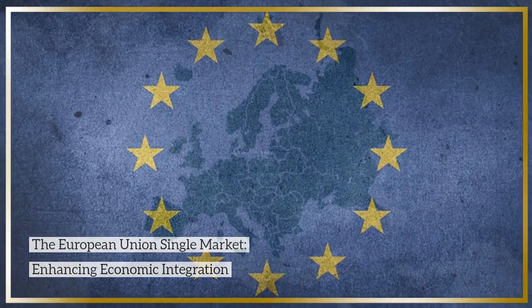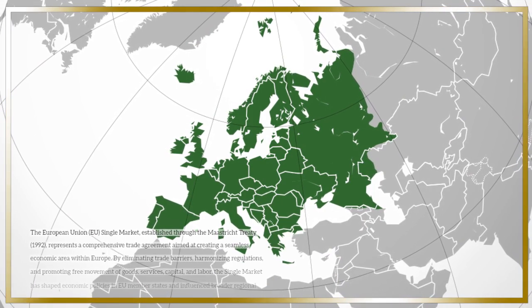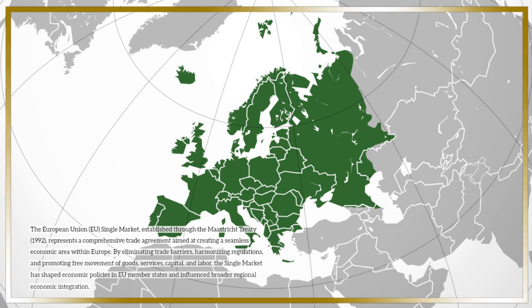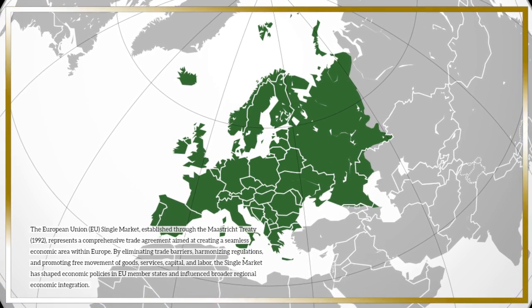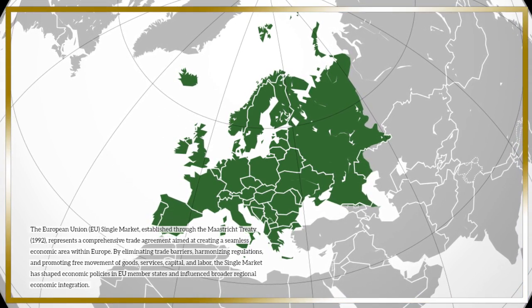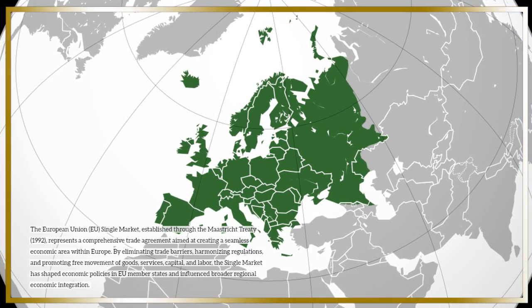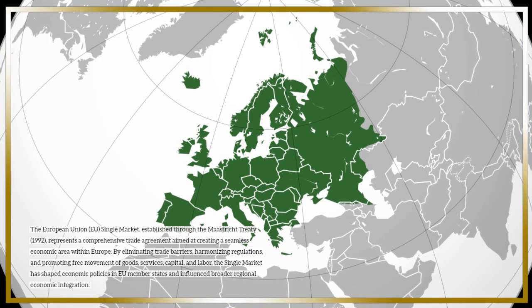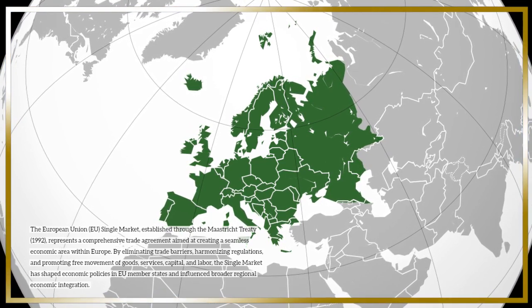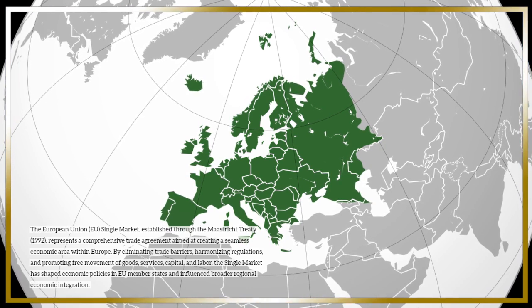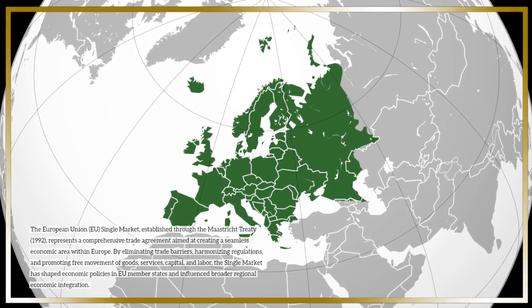The European Union (EU) Single Market, established through the Maastricht Treaty of 1992, represents a comprehensive trade agreement aimed at creating a seamless economic area within Europe. By eliminating trade barriers, harmonizing regulations, and promoting free movement of goods, services, capital, and labor, the single market has shaped economic policies in EU member states and influenced broader regional economic integration.